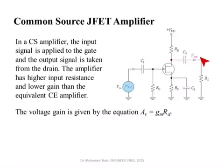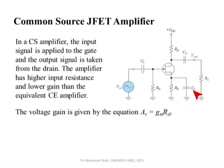We have some load here — it can be a loudspeaker or some other load. The capacitor at the source is called the bypass capacitor, because at AC it shorts out the source resistance. So for AC analysis, the source is effectively connected to ground because this point becomes a ground due to the short circuit of this capacitor. The value of this capacitor is selected such that at the frequency of the input signal it represents very low impedance. So all three capacitors are open circuit for DC and short circuit for AC.